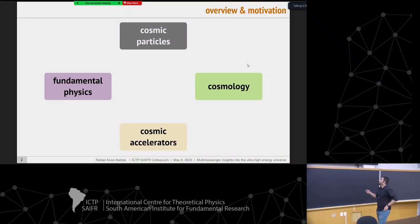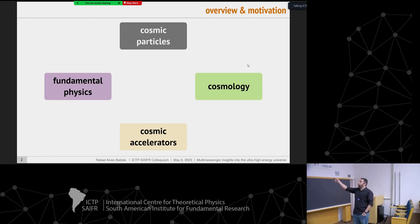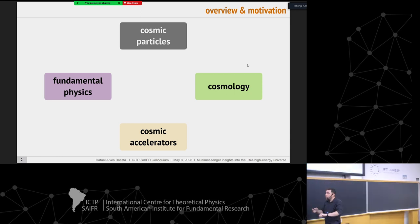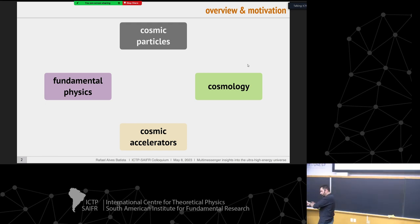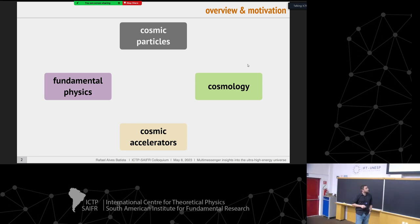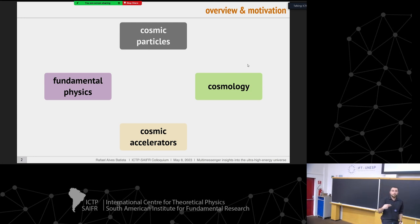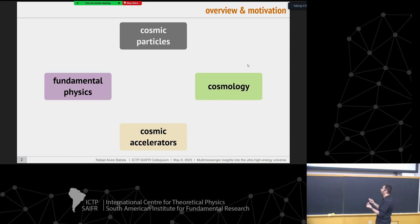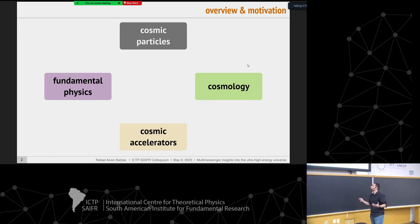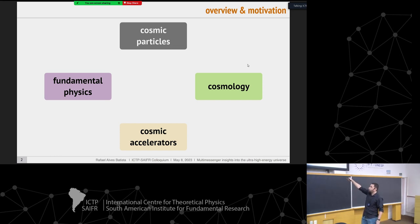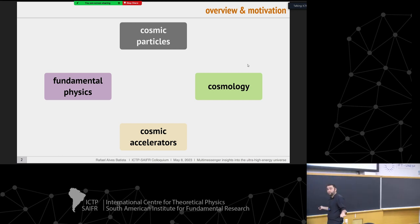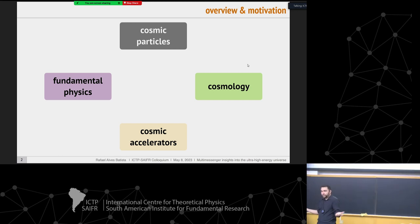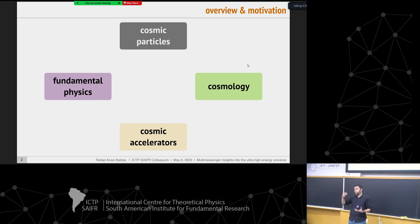The overview of this talk is the following. We have cosmic particles — cosmic rays, gamma rays, or neutrinos — and if we want to do astrophysics, to learn how these particles were generated, which processes produce them, and in which extreme astrophysical environments they were accelerated to very high energies, we need information about fundamental physics and cosmology. The cosmology tells us how particles travel in the universe, and the fundamental physics tells us how particles interact during their journey from the source to Earth.